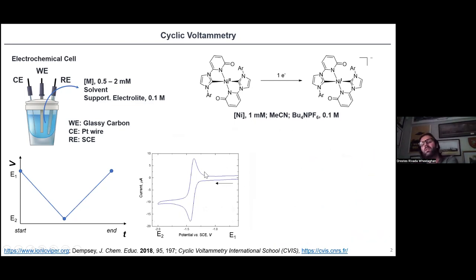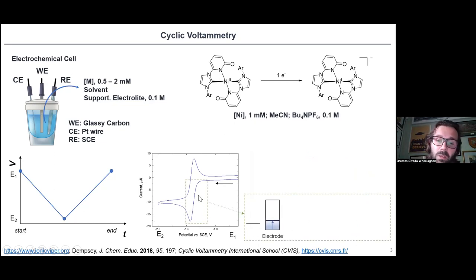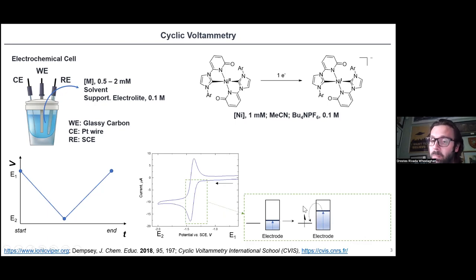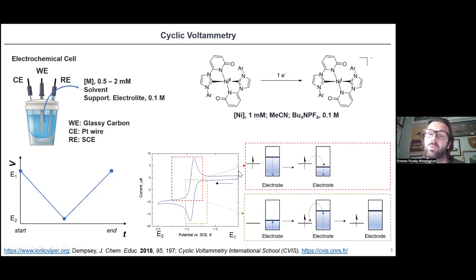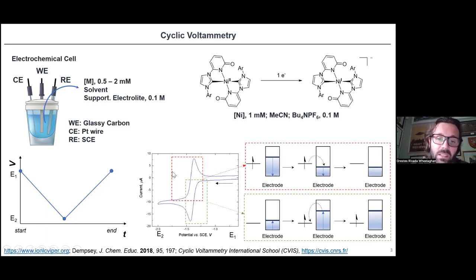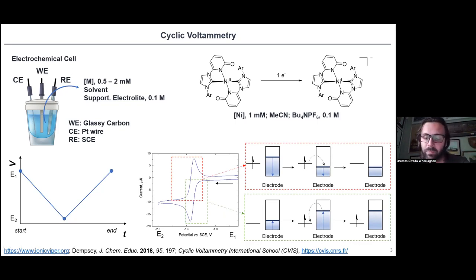From an energy point of view, in the reduction (cathodic) part, what happens is that you increase the energy level in the electrode to a level at which the electron is transferred to the complex. On the other hand, in the oxidation part, you reduce the energy levels of the electrode, and then the electron is transferred from the complex back into the electrode. This is what we will use throughout the talk to understand the electrochemical response of a compound or electrocatalytic reaction for CO2 reduction.